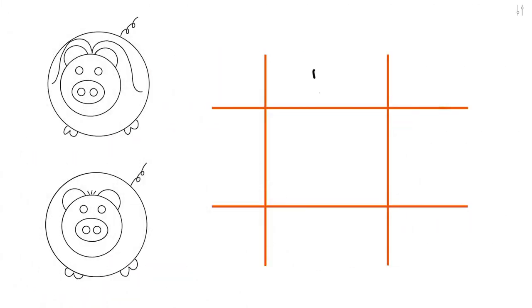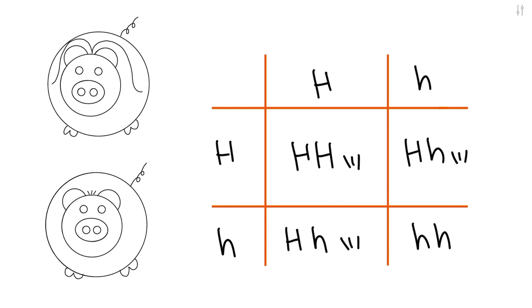In the second generation, it will be a little different. Since all the offspring are heterozygous, their possibilities for children are very different. They can be homozygous dominant with two capital H's or homozygous recessive with two lowercase h's, both having a 25% chance, as well as heterozygous, which is a 50% chance. This means in terms of phenotype, there is a 75% chance of short hair and a 25% chance of long hair.